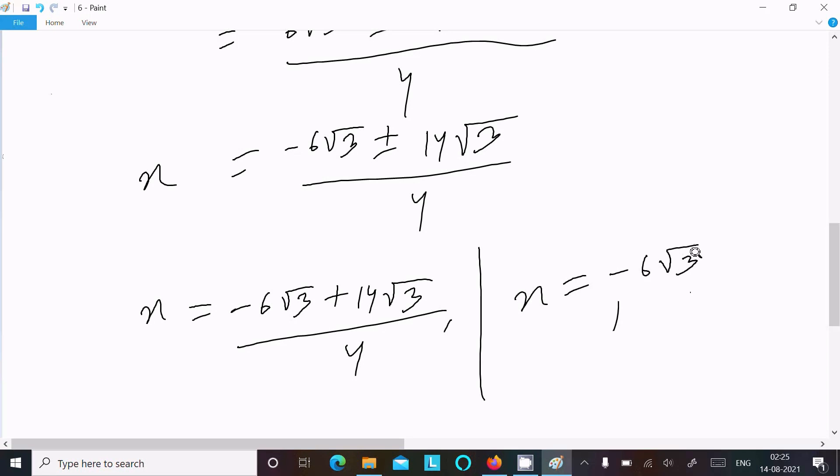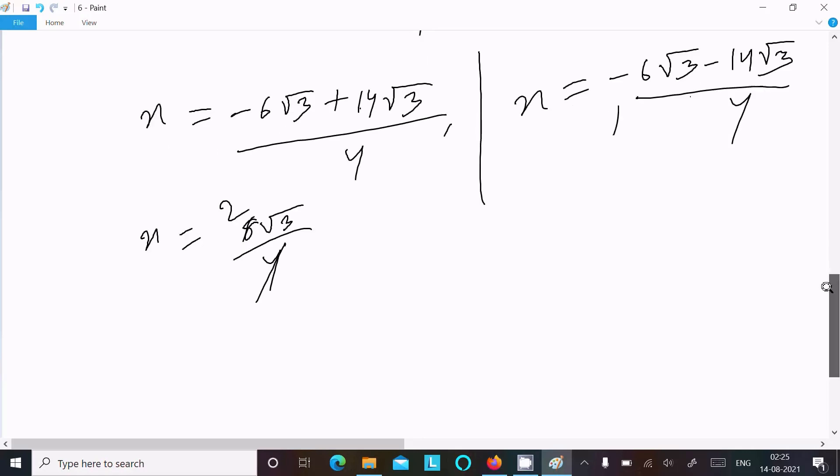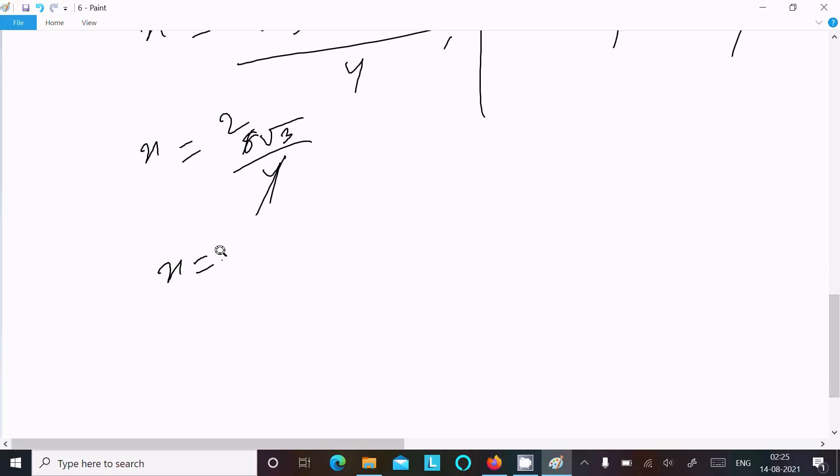Taking the positive sign: x = (-6√3 + 14√3) / 4 = 8√3 / 4. This cancels by dividing by 2: x = 2√3. So x equals 2√3.